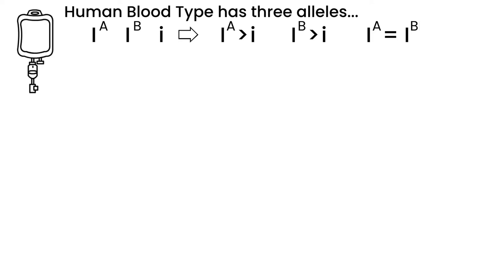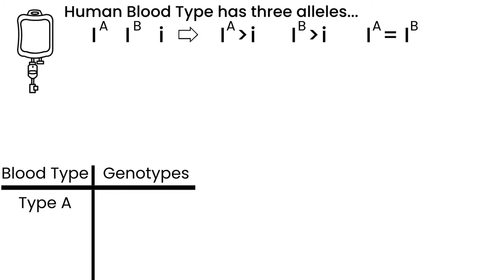So for type A blood, the genotype would be homozygous, capital I A, or heterozygous with a lowercase i, as it is dominant to it.